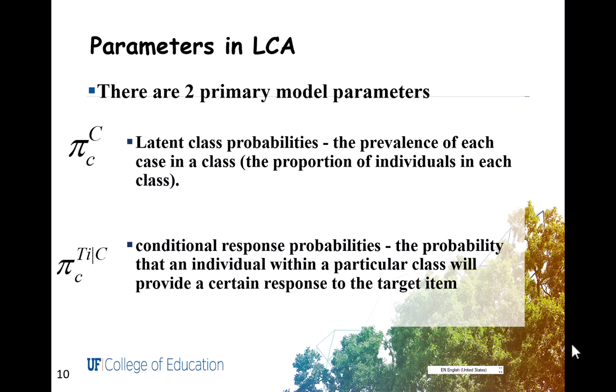which is the probability that an individual within a particular class will provide a certain response to a target item. The interpretation of the classes is done by looking at the conditional response probabilities.